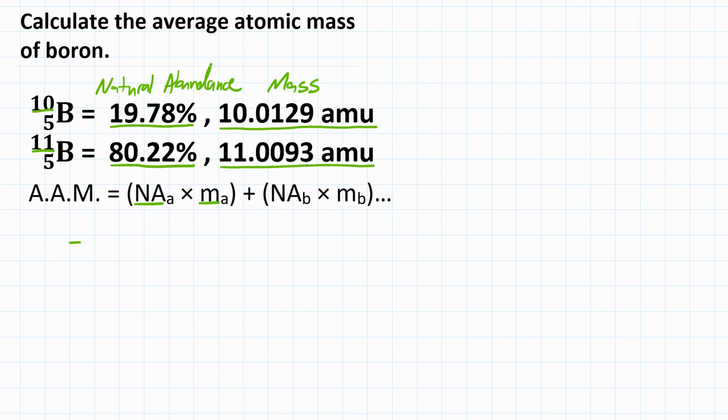Let's enter our values now. For the natural abundance of isotope A, our first isotope, that would be boron-10, we have a natural abundance of 19.78%. Let's change that to a decimal, though. We're going to get 0.1978 multiplied by the mass of that isotope, and that is 10.0129 AMU.